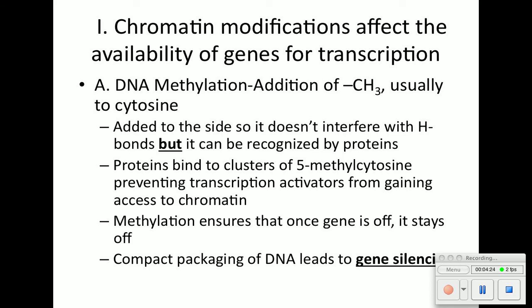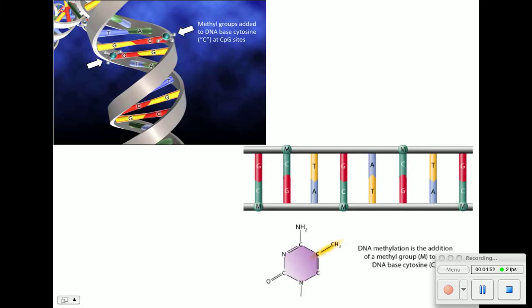When we have a cluster of methyl groups attached to the cytosine, it activates certain proteins to bind to it. Methylation turns genes off — we call this gene silencing. In this diagram, you can see methyl groups (CH3) attached to the cytosine. As a result, it causes the DNA to become more compact, so the gene is shut off.